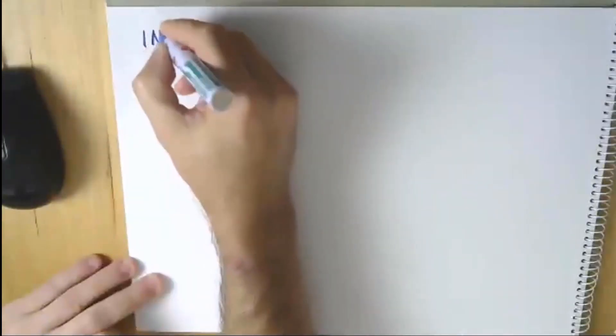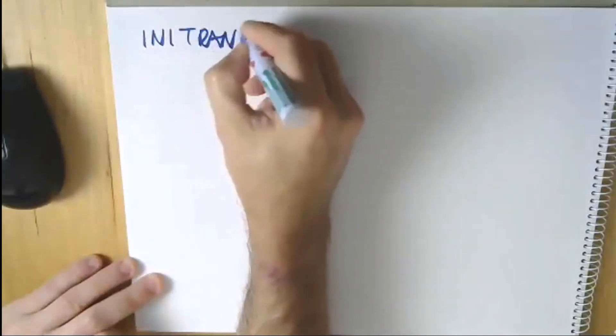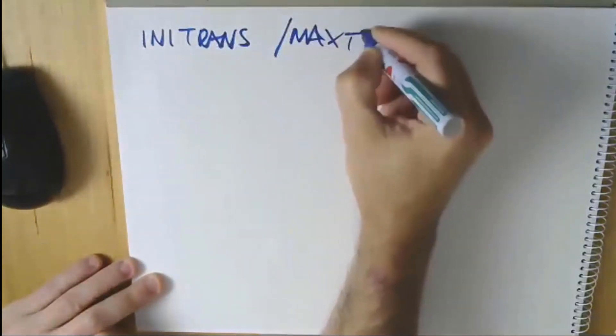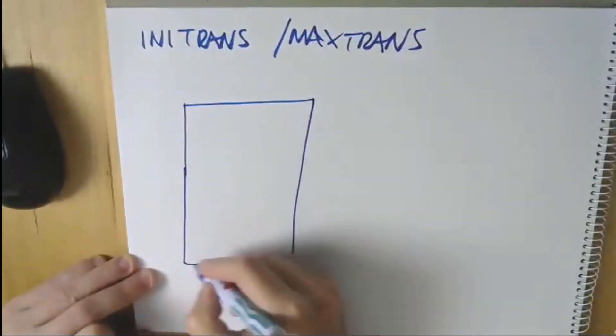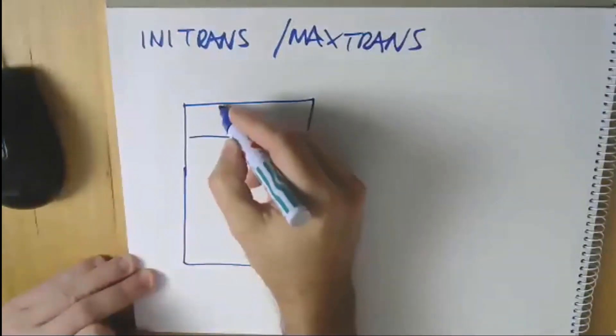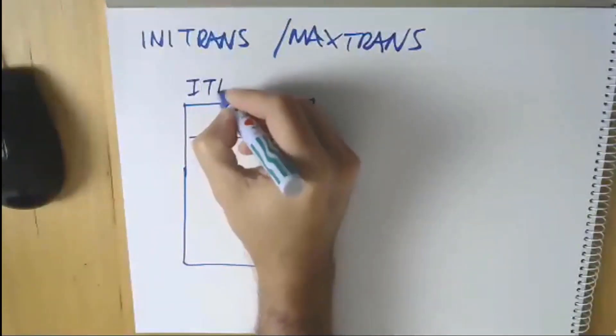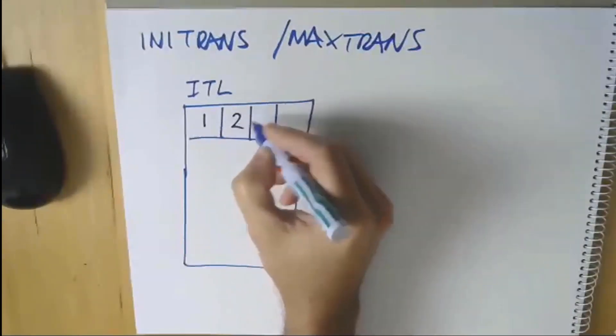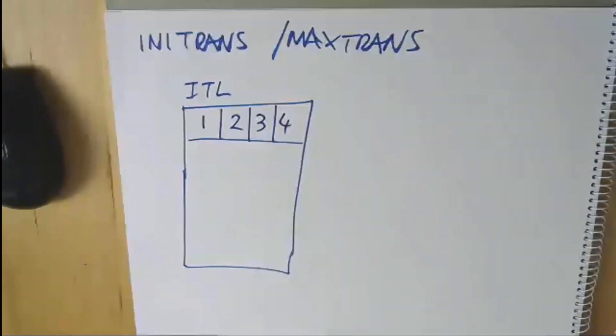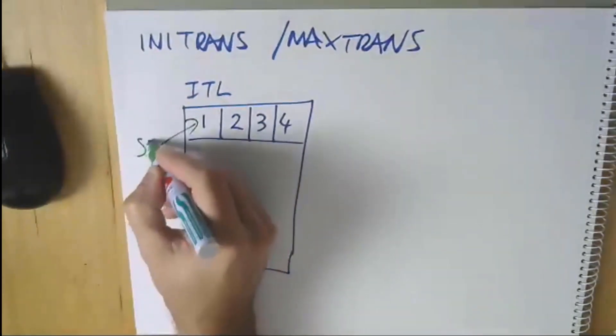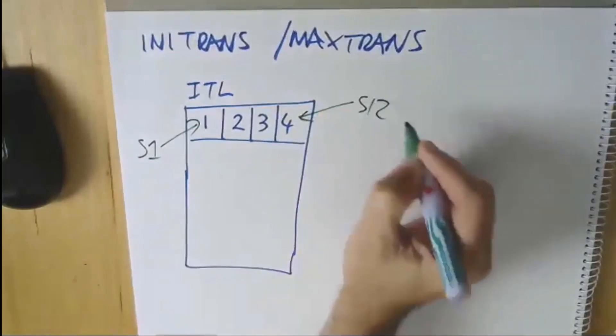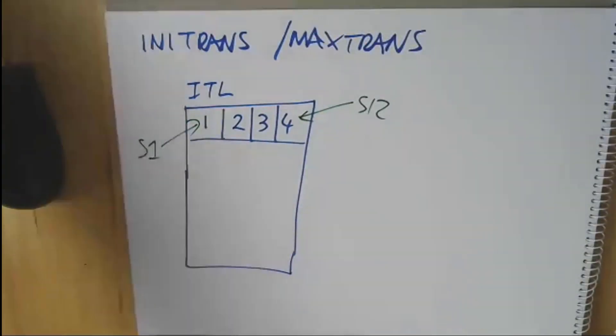Then we came to INITRANS and MAXTRANS. In a given database block we allocate a bit of space for what's called the Interested Transaction List, you'll see the term ITL. For example, here I've got four of them. This is the number of concurrent open transactions that can be active on a particular block at any given point in time. So that might be session one, this might be session twelve, and so forth. They can have uncommitted transactions going on.